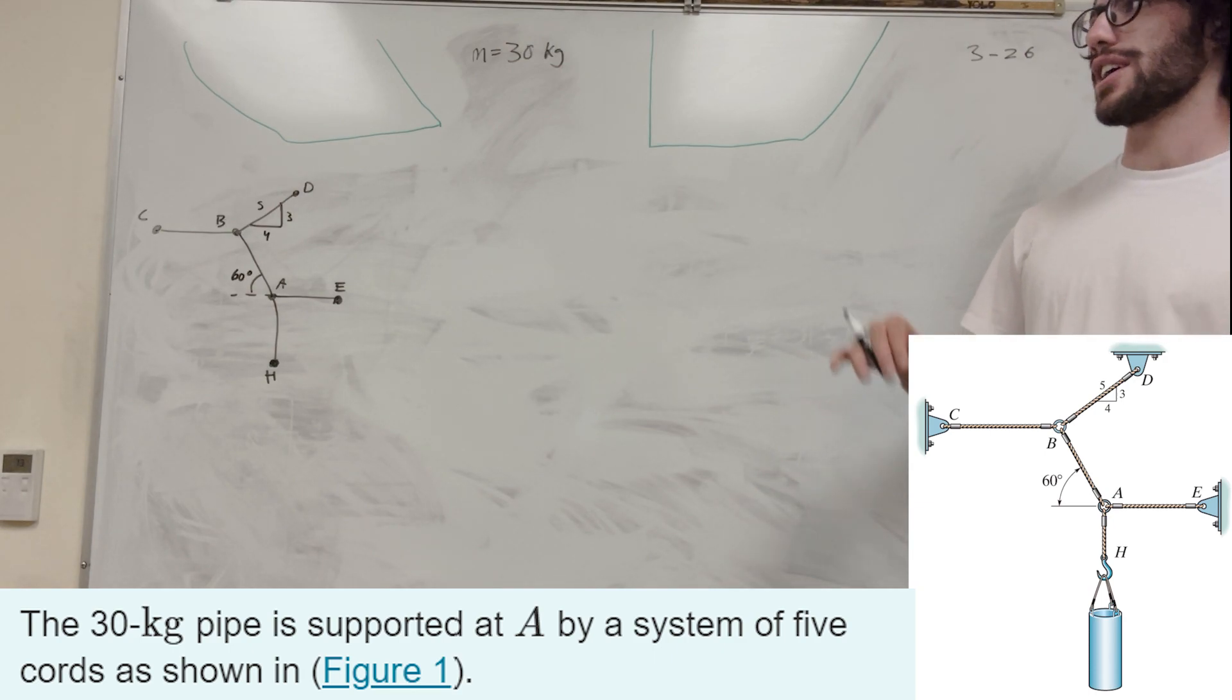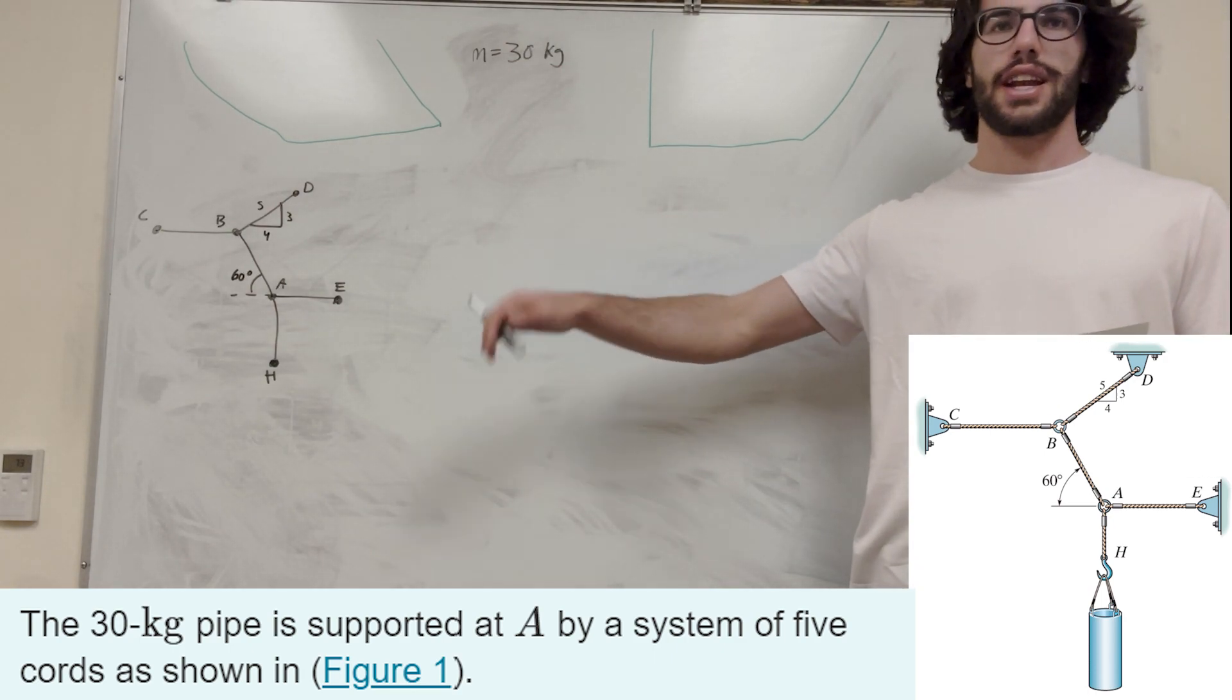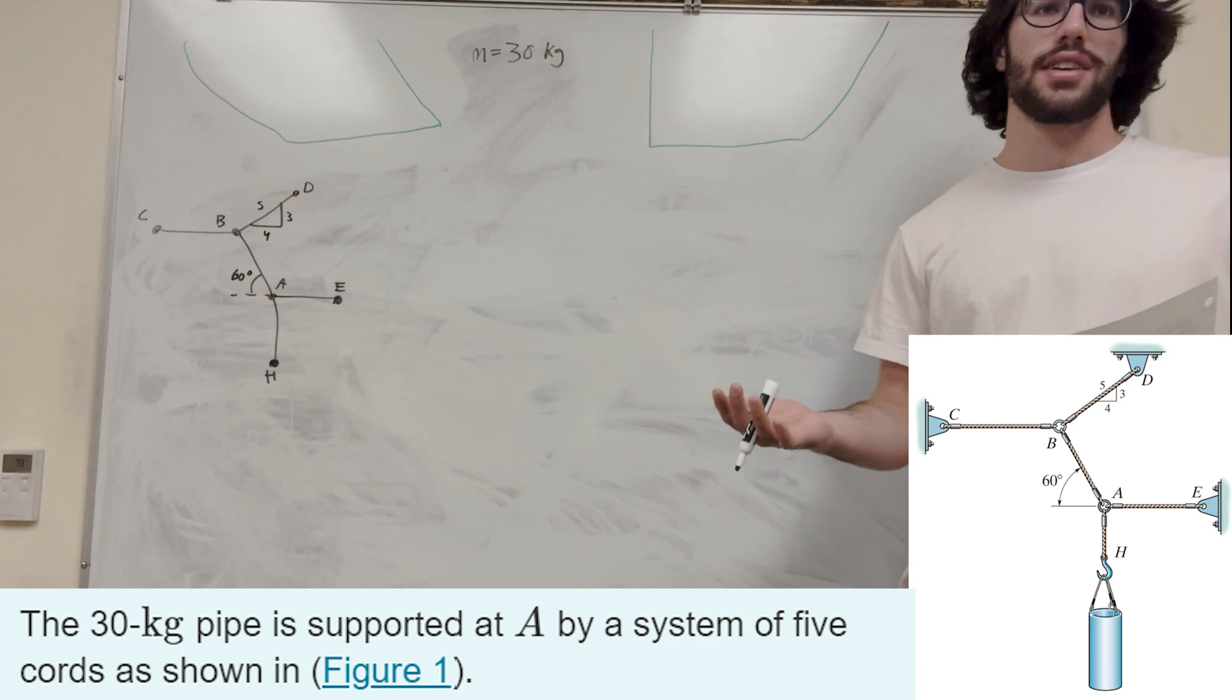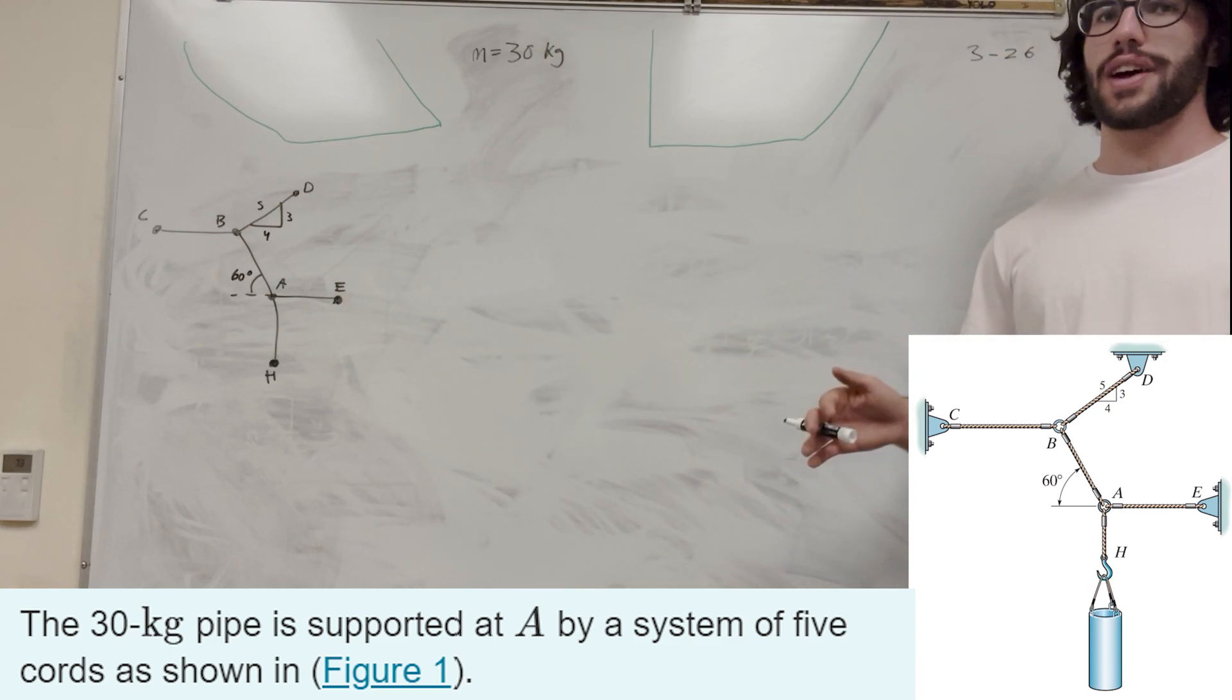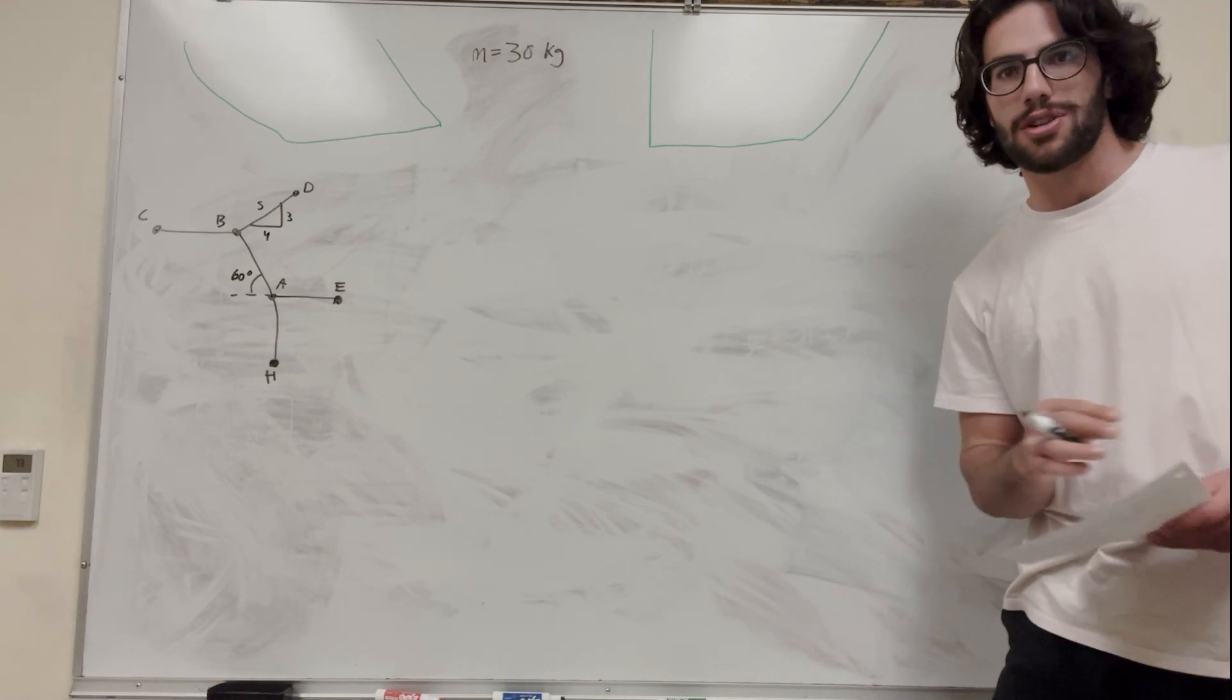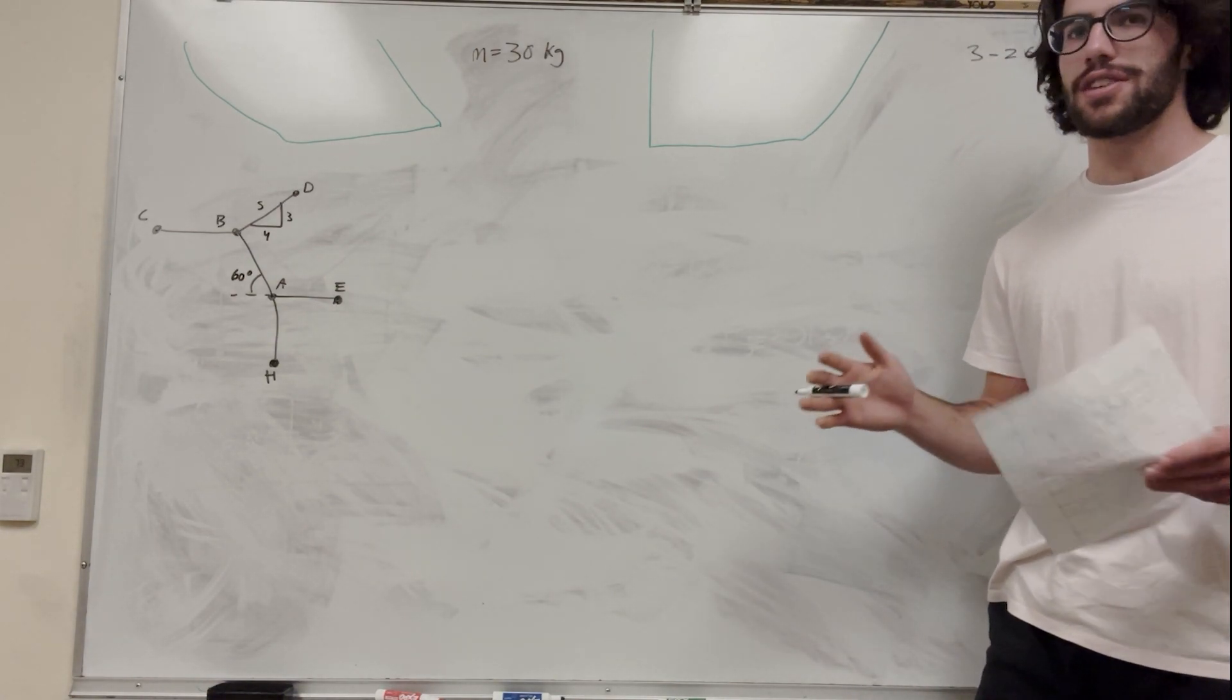We have this whole system going on and it gives us the mass of the thing getting hung at H. And it wants us to figure out every tension in every cable. So there's five parts because there's five cables, so let's go ahead and find all the cables. I'm not going to do them in order, by the way. We're just going to find each one however it comes up.